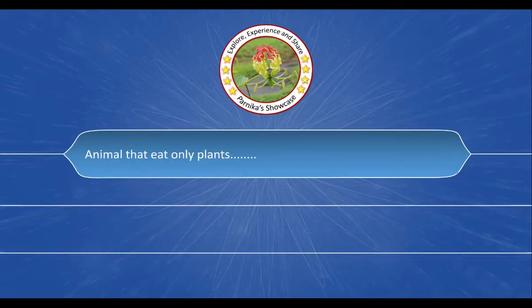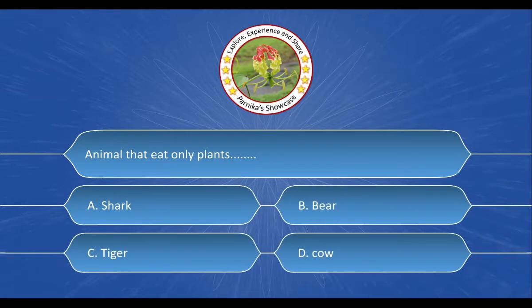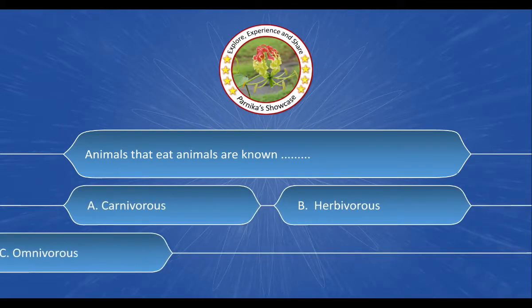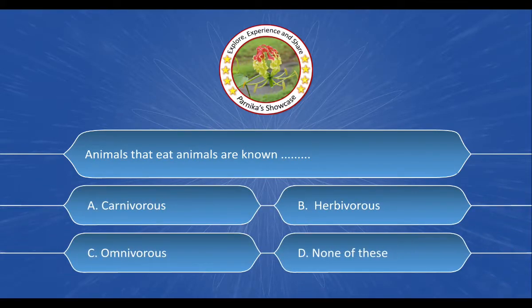Next question: Animals that eat only plants. Options are A. Shark, B. Bear, C. Tiger, D. Cow. And the correct answer is option D. Cow.